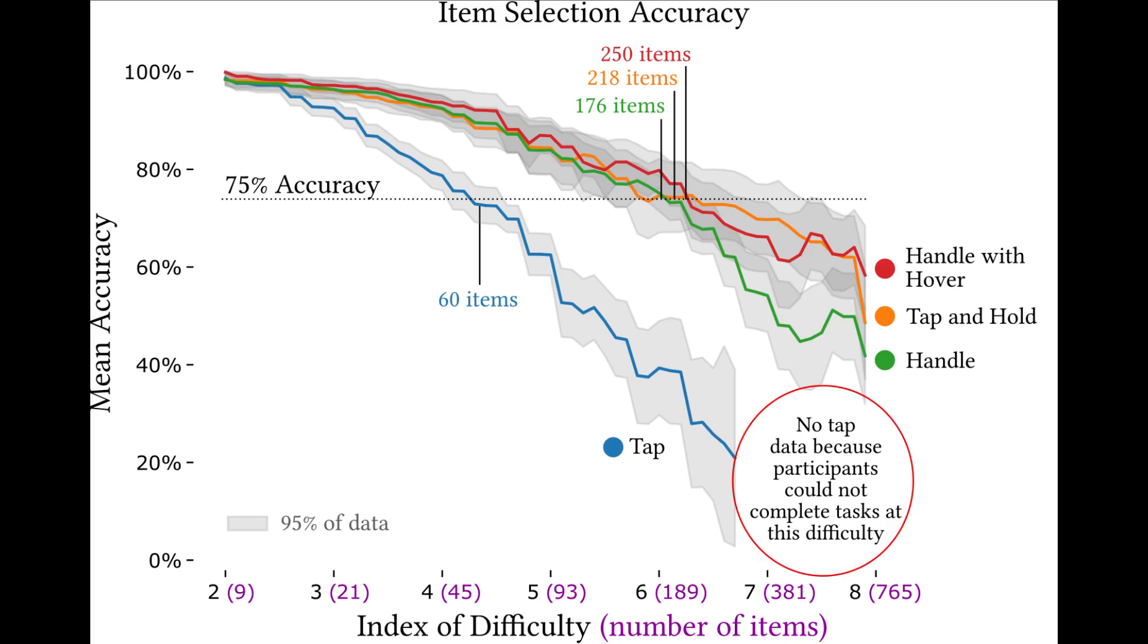At 75% accuracy, participants could only select the target item from 60 other items using tap, whereas they could select it from 176 to 250 items using one of the other techniques. That is a dramatic difference that validates our hypothesis that providing visual feedback allows users to interact with more data accurately.